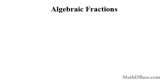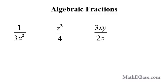As we saw in Part 3, algebraic fractions have variables in the numerator or in the denominator, or both. For example, 1 over 3x squared, z cubed over 4, 3xy over 2z, and u are all algebraic fractions. The last example applies because any variable — u in this case — can be written as an improper fraction with denominator 1.